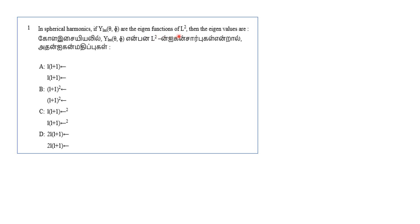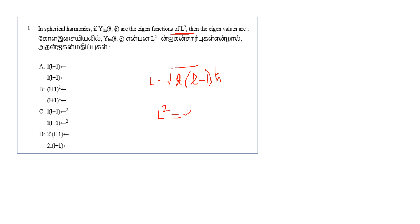In spherical harmonics, if Y(l,m)(theta, phi) are the eigen functions of L-squared, then the eigen values are what? In the spherical harmonics topic, the formula for L is: L is equal to the square root of l(l+1) times h-cross. But here we want the eigen values of L-squared, so L-squared is equal to l(l+1) times h-cross squared.